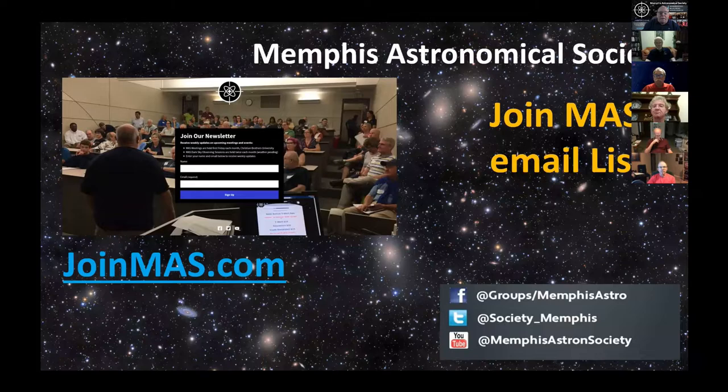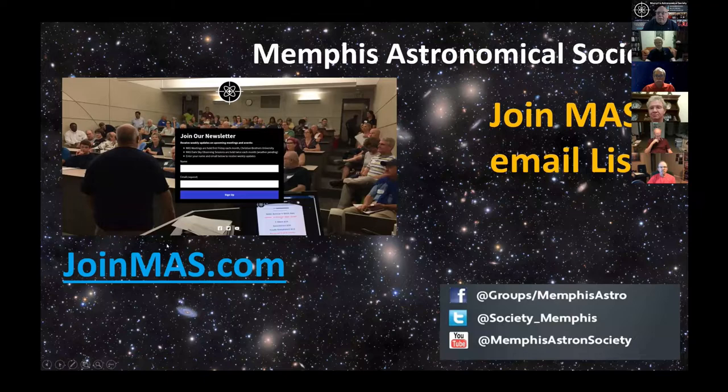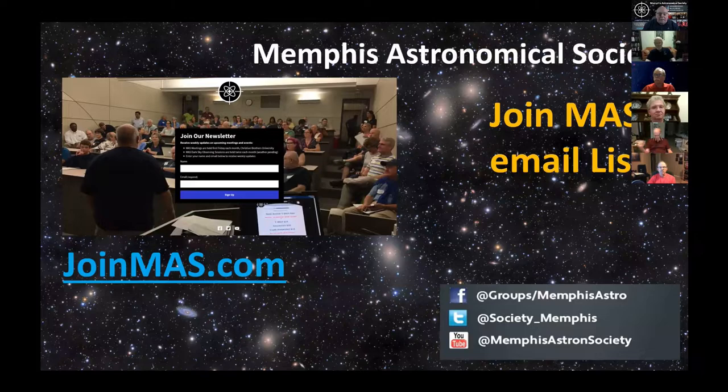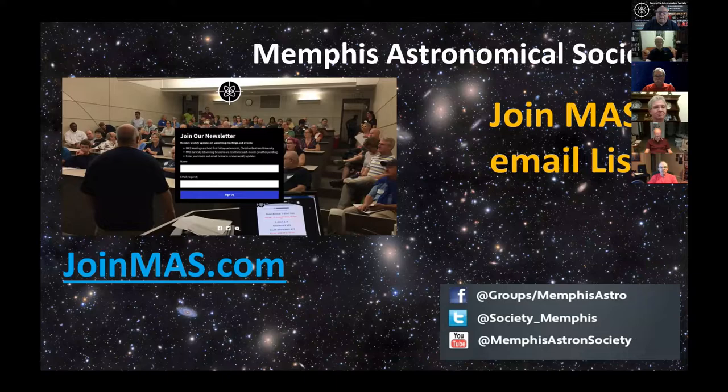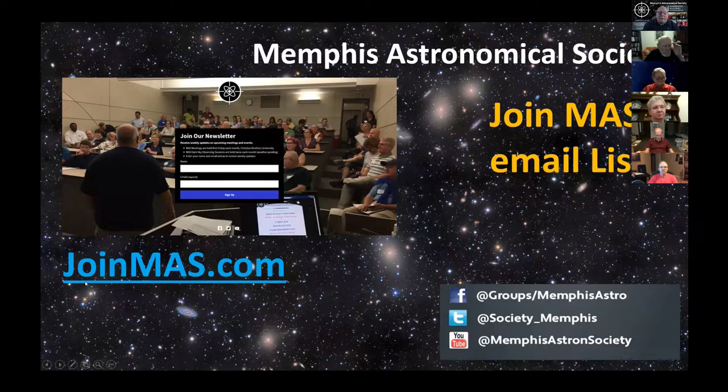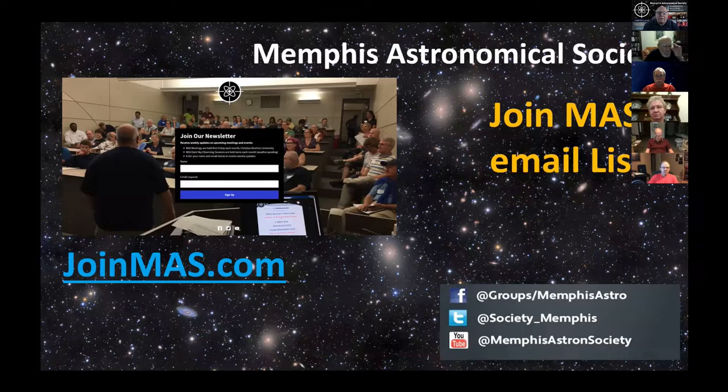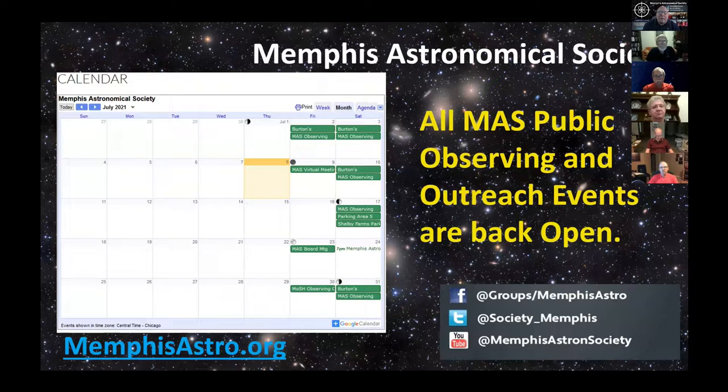You can also get our newsletter by going to joinmas.com and filling out the quick form with just your name and email address. Typically we send out a go and no-go notice for our observing session, notices about upcoming meetings and topics, and any Memphis area related astronomy events that might be going on.